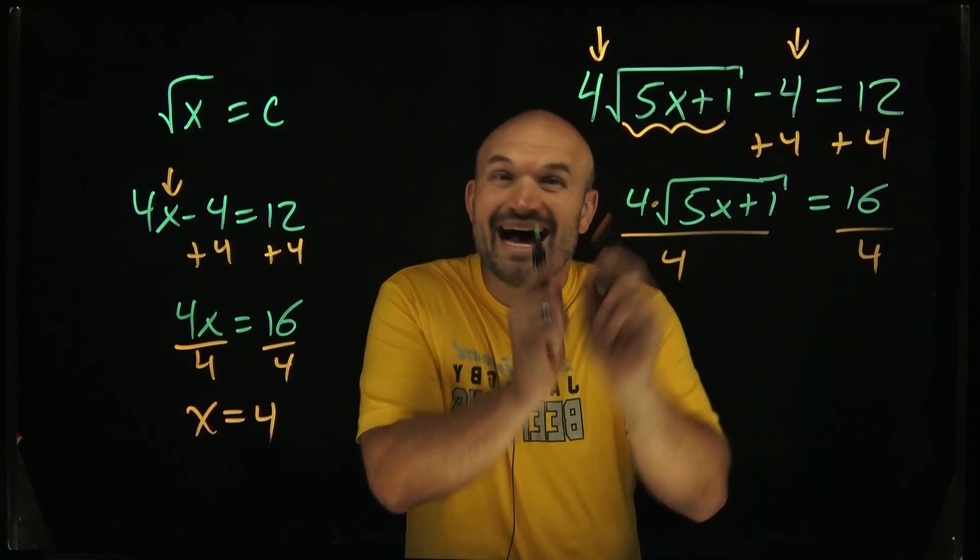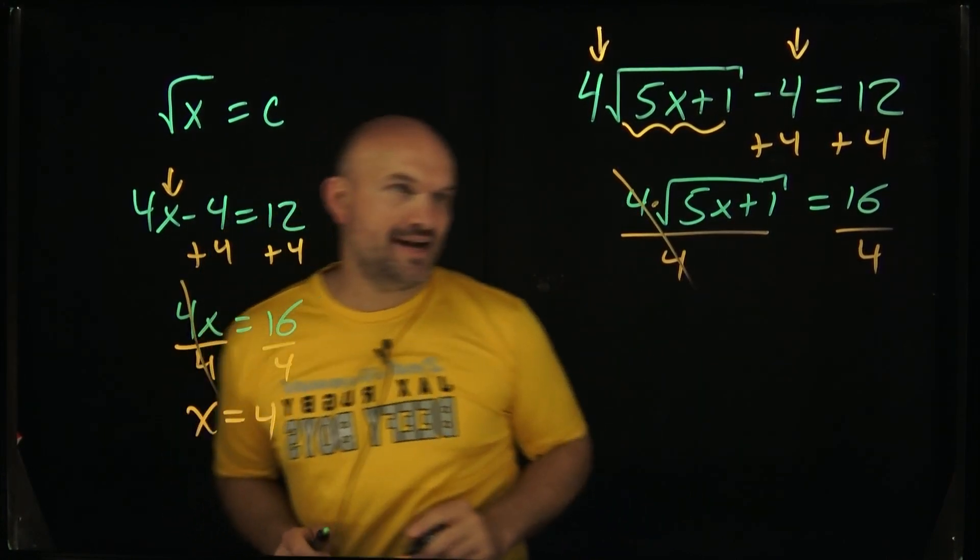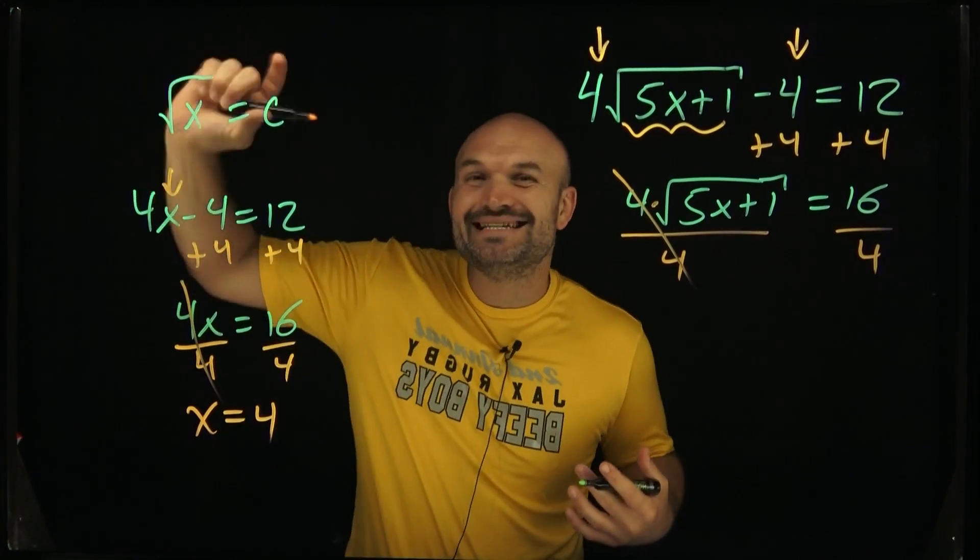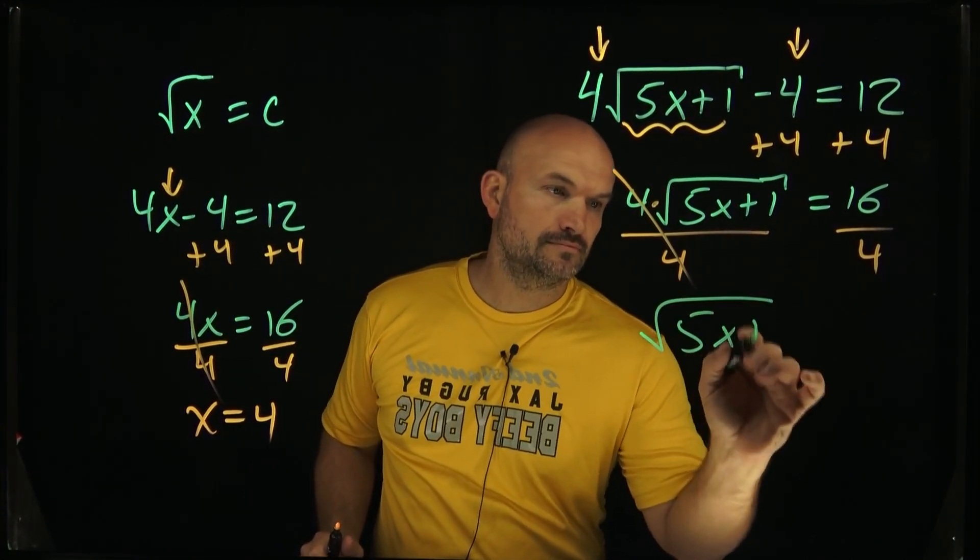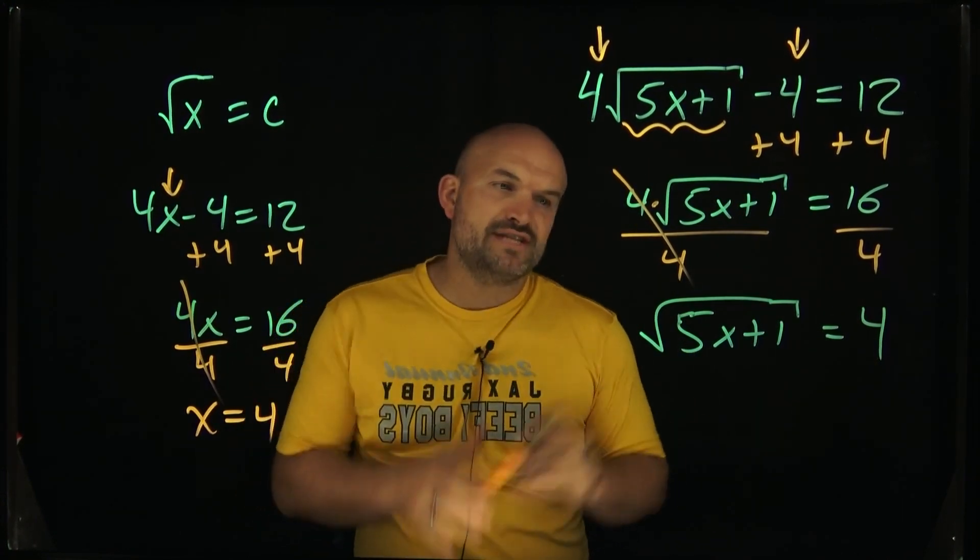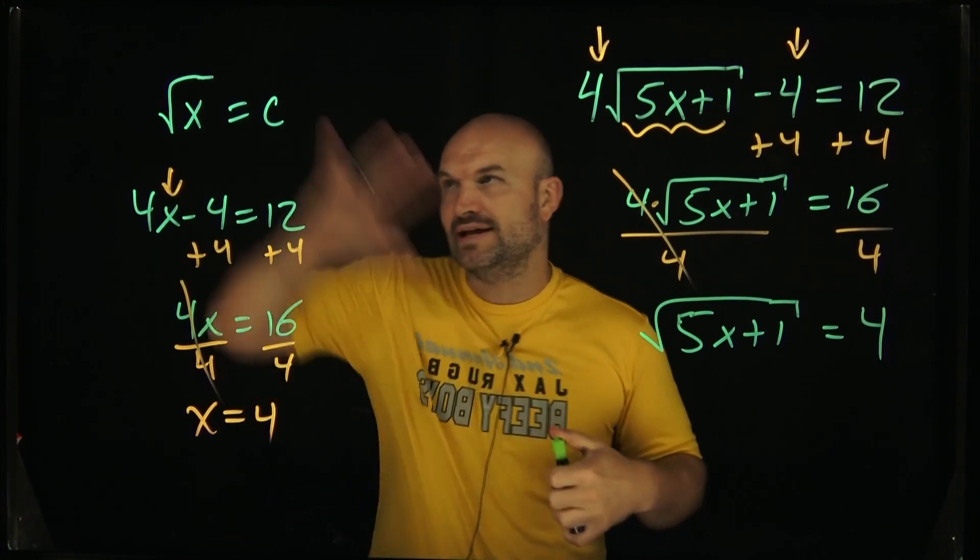And remember, this is 4 times the square root of 5x plus 1. So those are going to divide out just like those divide out. And now we're going to be left with a square root function or square root equation where it is isolated. So here's where it comes into the importance of understanding why we want to be able to have everything isolated into this form.